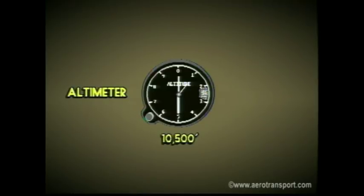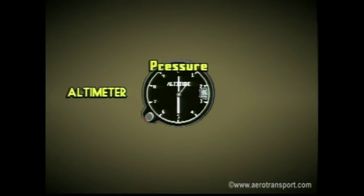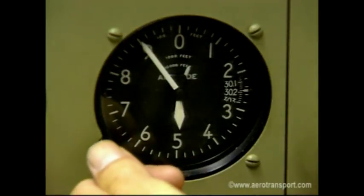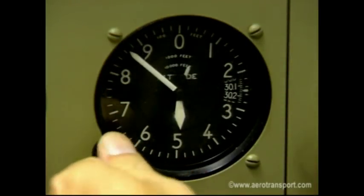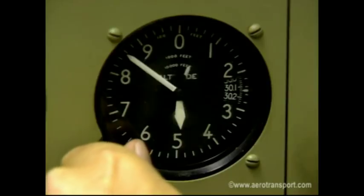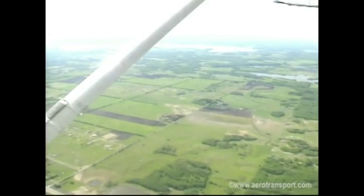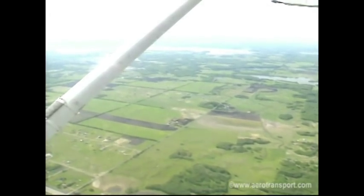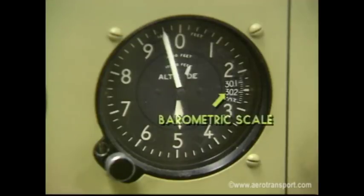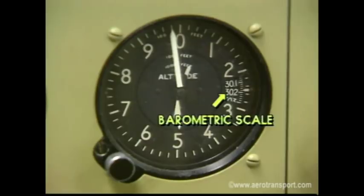The altimeter shown on the screen is reading 10,500 feet. The altimeter is subject to errors caused by pressure, temperature, and the effect of mountains. Pressure errors occur if the altimeter is not calibrated to current barometric readings. This instrument measures heights above sea level. On a long cross-country flight, barometric pressure can vary. The altimeter has a barometric scale calibrated in inches of mercury, which allows you to keep the altimeter setting current.